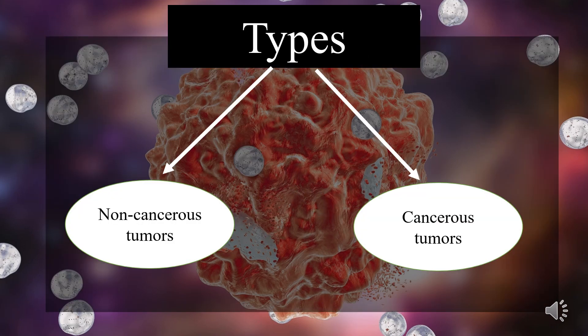Coming to its types, tumors are groups of abnormal cells that form lumps or growths. They can start in any one of the trillions of cells in our bodies. Tumors grow and behave differently depending on whether they are cancerous, which is also called malignant, and non-cancerous, which is benign or precancerous.